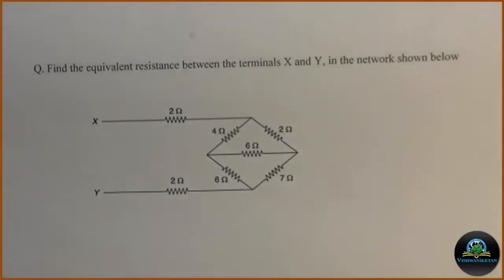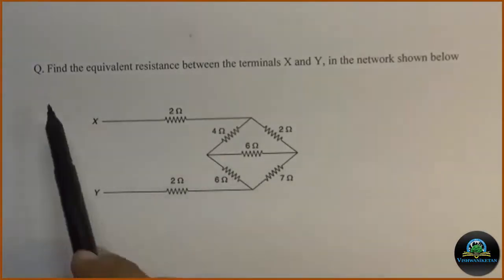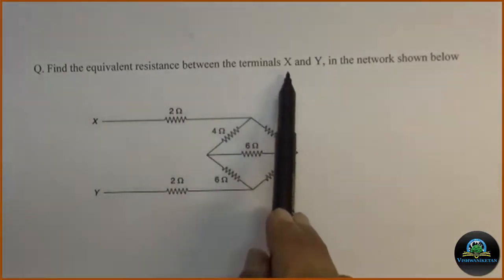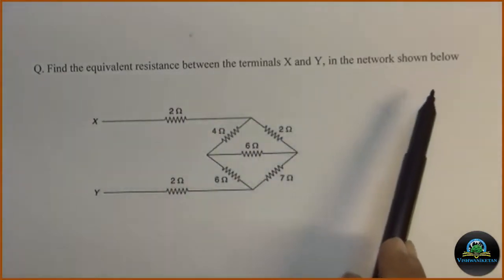Star delta conversion is a technique which is used to reduce the circuit or simplify the complicated circuit for further analysis of the circuit. Let us take an example to study how star delta conversion can be used. The example which I have given is find the equivalent resistance between the terminals X and Y in the network shown below.